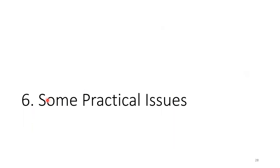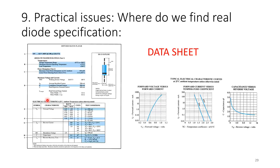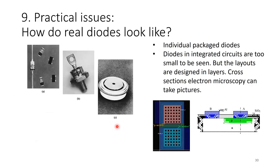Some practical issues: real diodes do exist and are widely used. When you purchase a diode, you will find a data sheet with graphs showing typical values and specifications. Real diodes can be individual packaged components or diodes in integrated circuits — too small to see because they are among hundreds of thousands of transistors in a small chip. They are designed in layouts with layers, and cross-section electron microscopy can image them.